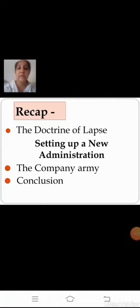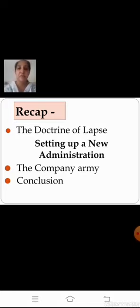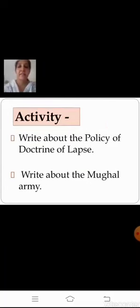Quick recap of today's session: we learnt about the Doctrine of Lapse, and the policies the company adopted in setting up a new administration — in the sphere of justice as well as the company army. We also saw the conclusion of the chapter on how the East India Company established power, going from trade to territory. For your activity, write about the Doctrine of Lapse and the Mughal army — remember the army was divided into two types. Write this in your assignment sheet. Please also download the PDF of this chapter from the NCERT textbook link, read through it, and note the important points for future reference.